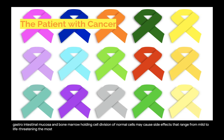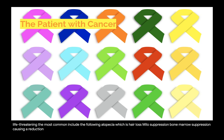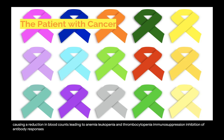The most common side effects include alopecia, which is hair loss; myelosuppression — bone marrow suppression causing a reduction in blood counts leading to anemia, leukopenia, and thrombocytopenia; immunosuppression — inhibition of antibody responses resulting from leukopenia; nausea, vomiting, diarrhea, loss of appetite; and gastrointestinal mucositis.